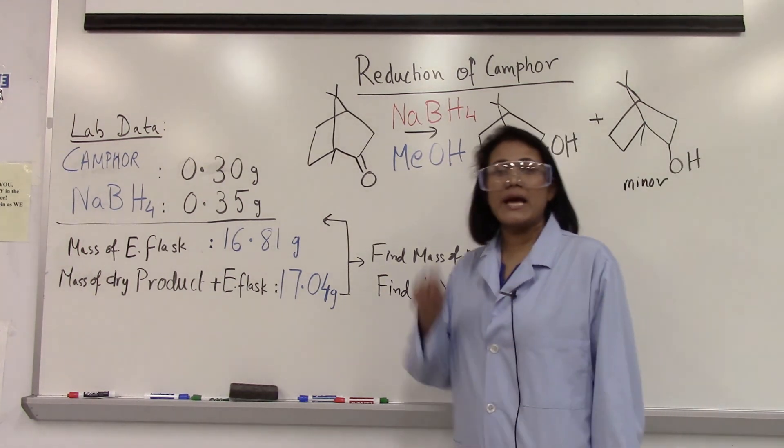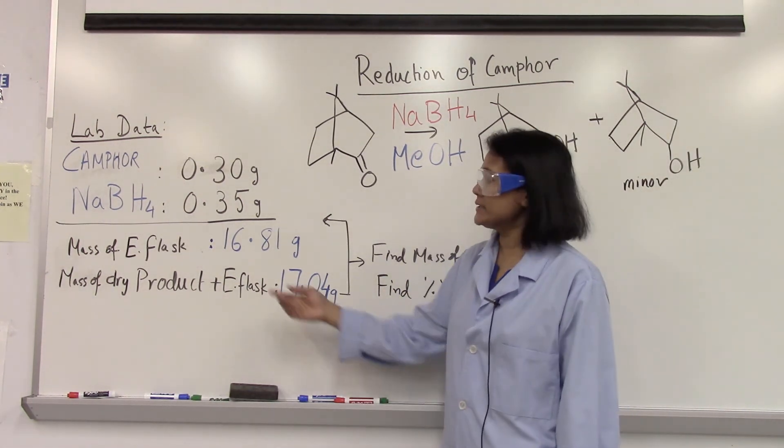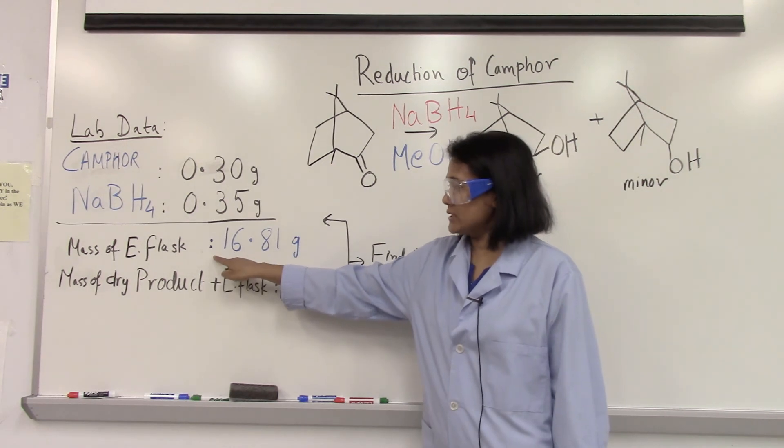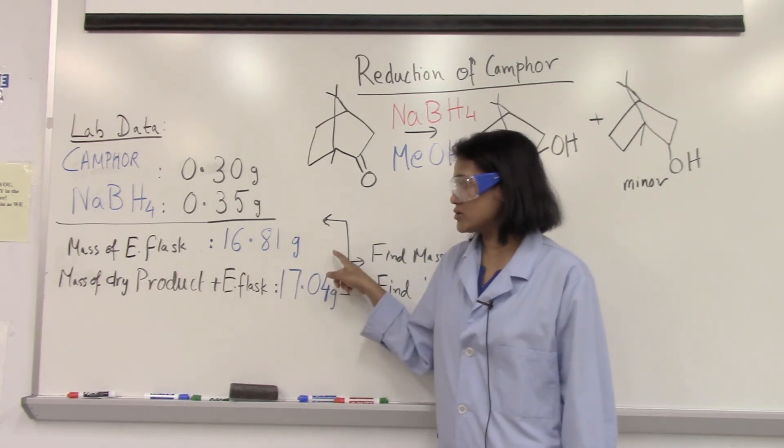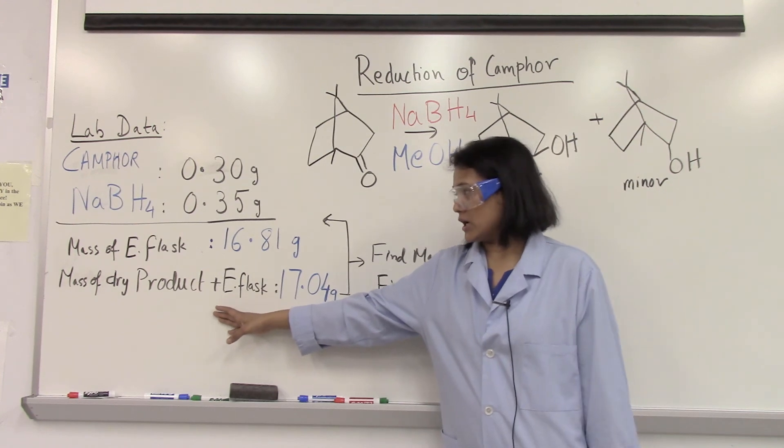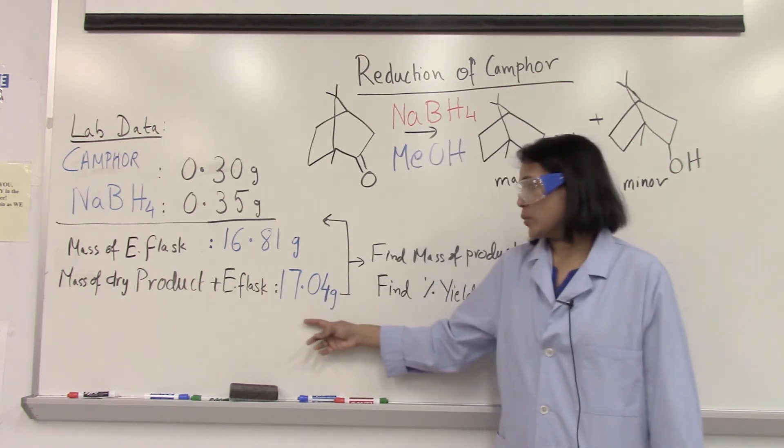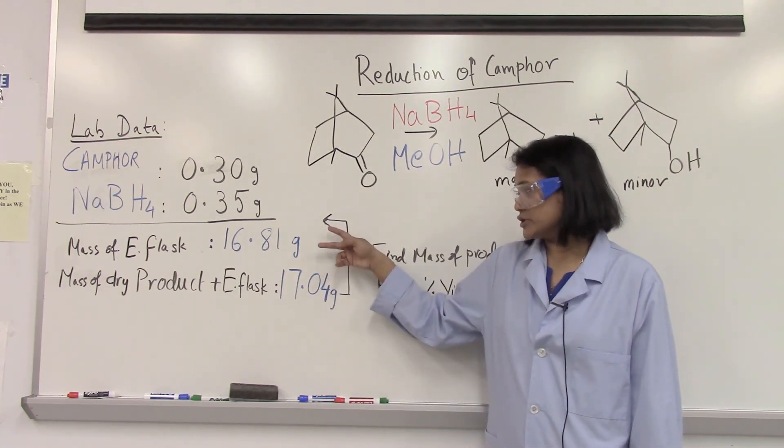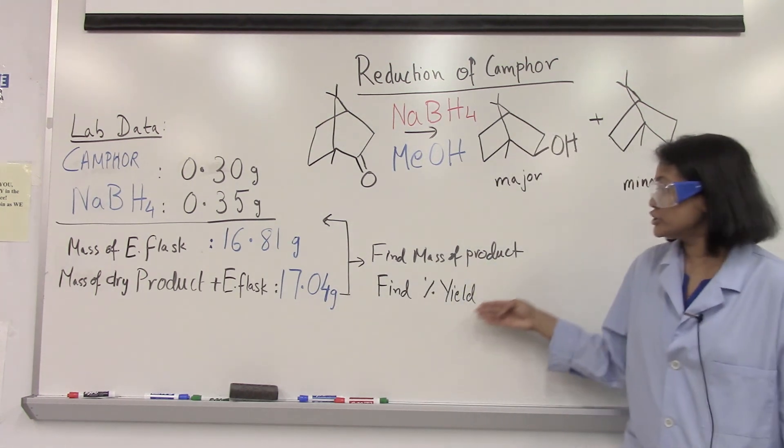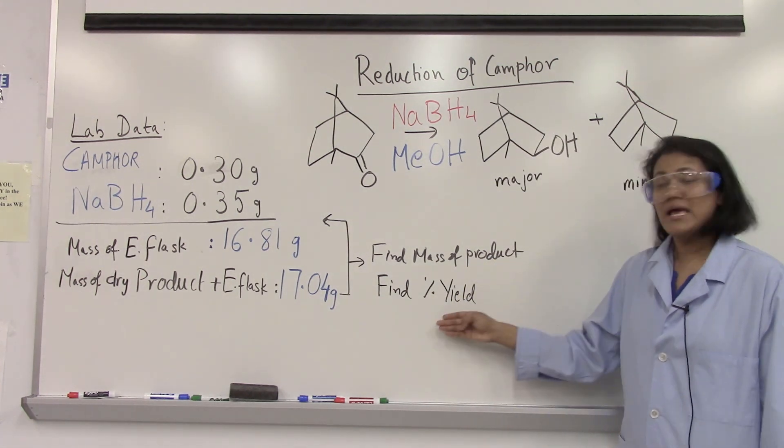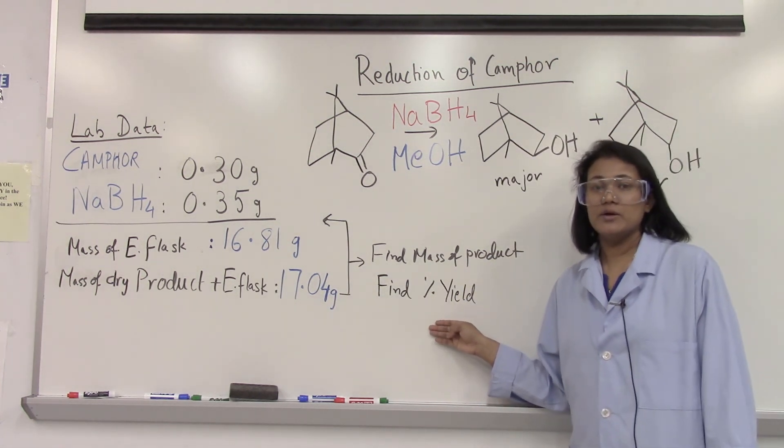So at the end of the reaction we have our dried product. The empty Erlenmeyer flask weighed 16.81 grams and the Erlenmeyer flask with the product after the product was dried weighed 17.04 grams. So the difference of these two numbers should help you find the mass of the product and then eventually we can find the percent yield.